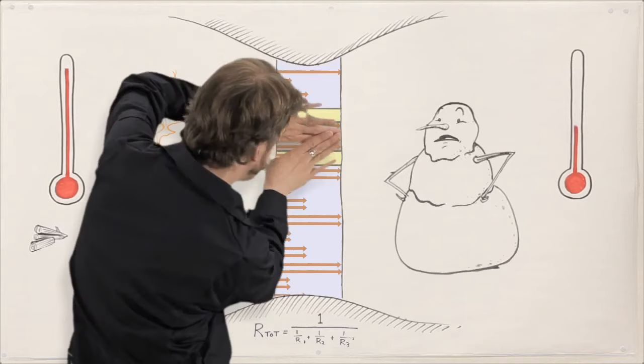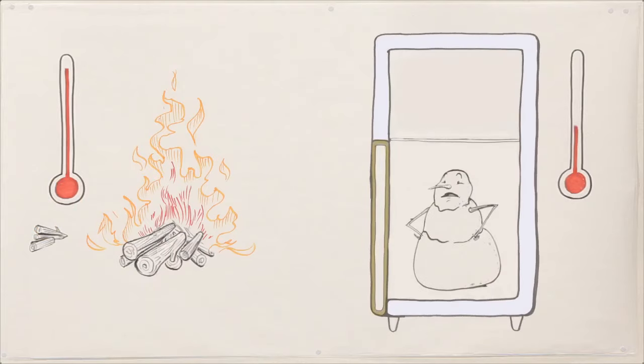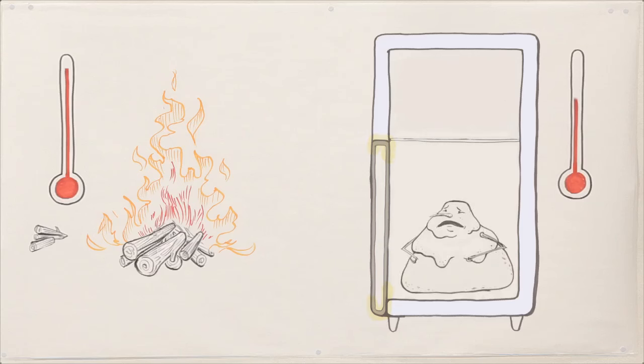So, super-insulating your refrigerator won't do much good if its metal skin wraps around from inside to outside. That metal will create a thermal bridge across the insulation, quickly conducting heat in.